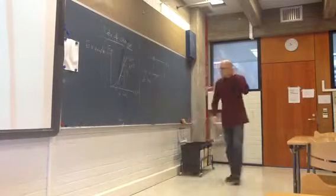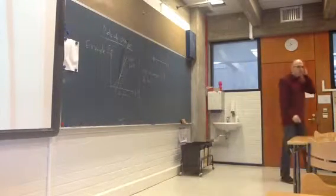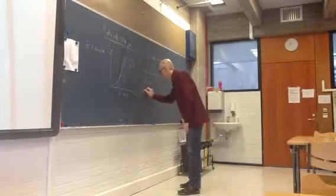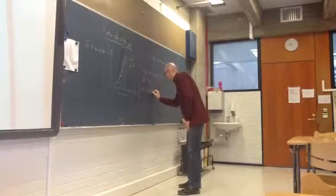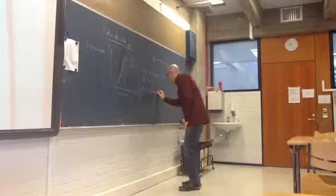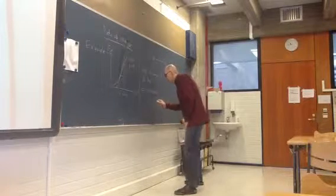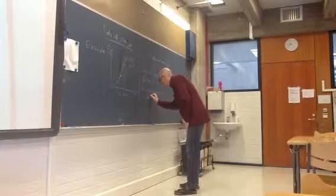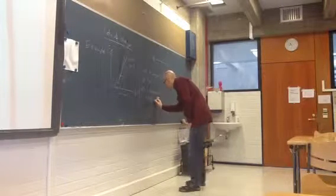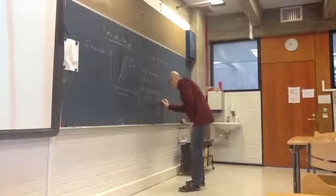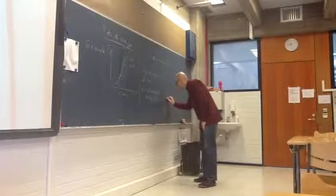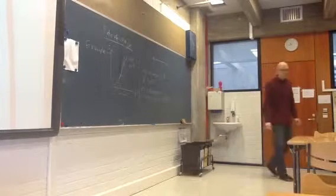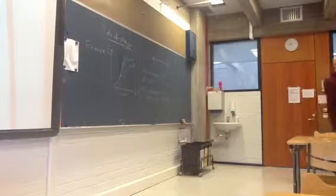So if the slope of the tangent is 2 at a specific time t, then the instantaneous velocity at t would be 2, and the unit would be meters per second.